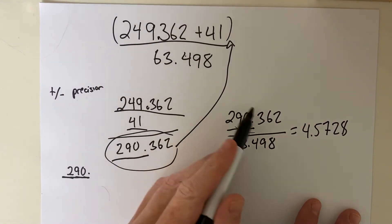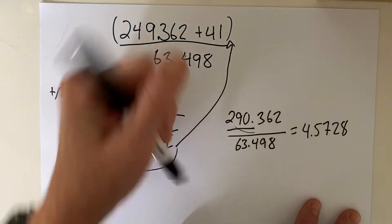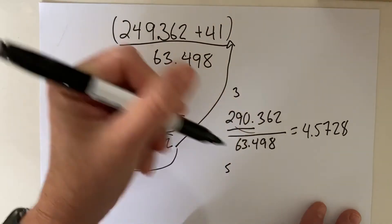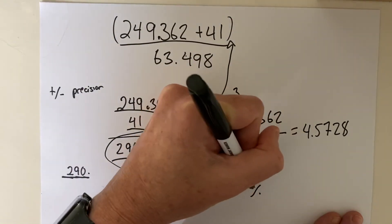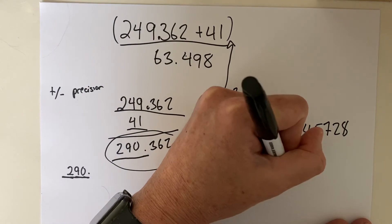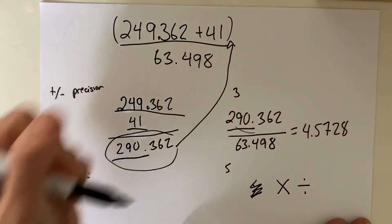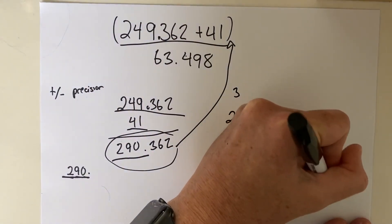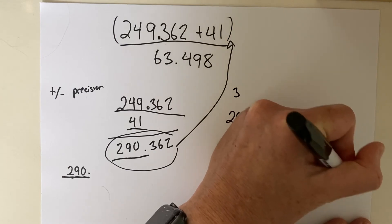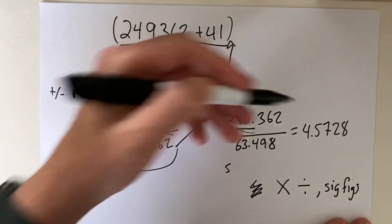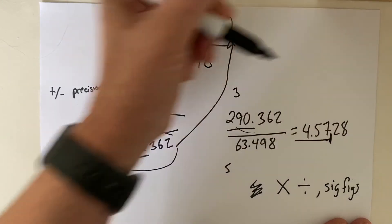But this, we only knew three of, and this we knew five of. So remember that when we multiply or divide, I don't know why I just wrote a percent sign. When we multiply or divide, we're looking at sig figs, not precision. So this had three, this had five. Our answer, therefore, is going to have three.